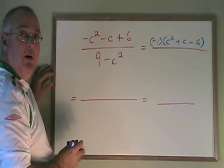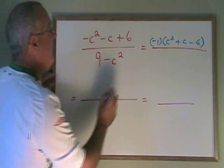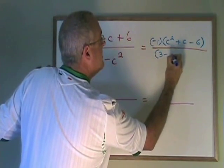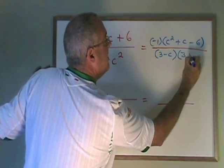That's the common factor method. The bottom is the difference of squares. So using the difference of squares method, I get 3 minus c, 3 plus c.